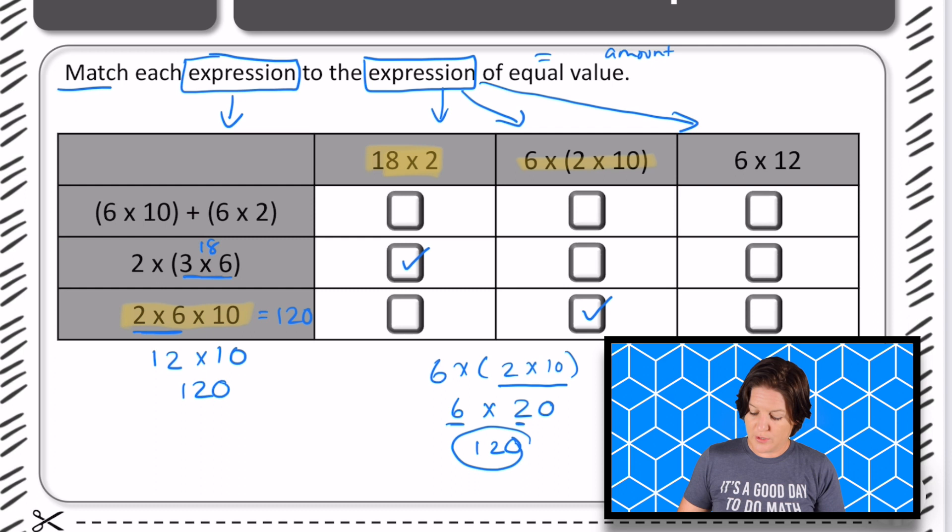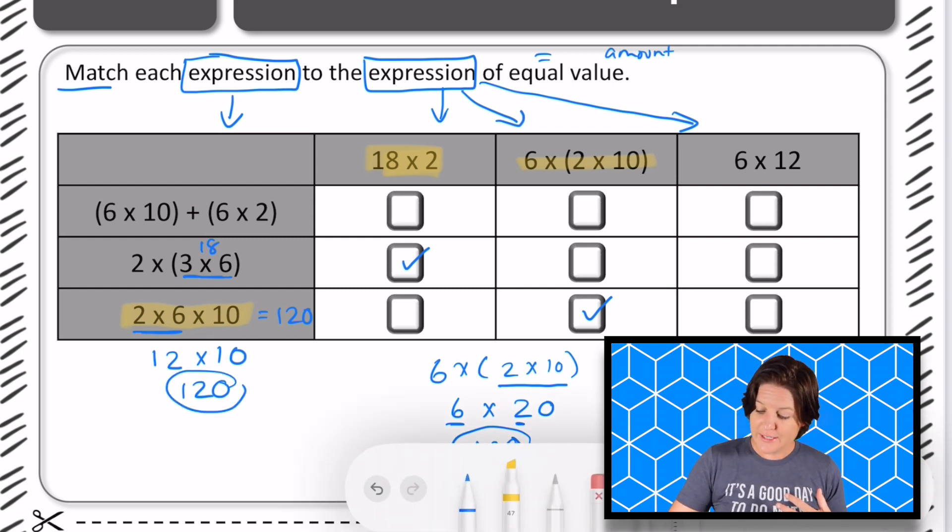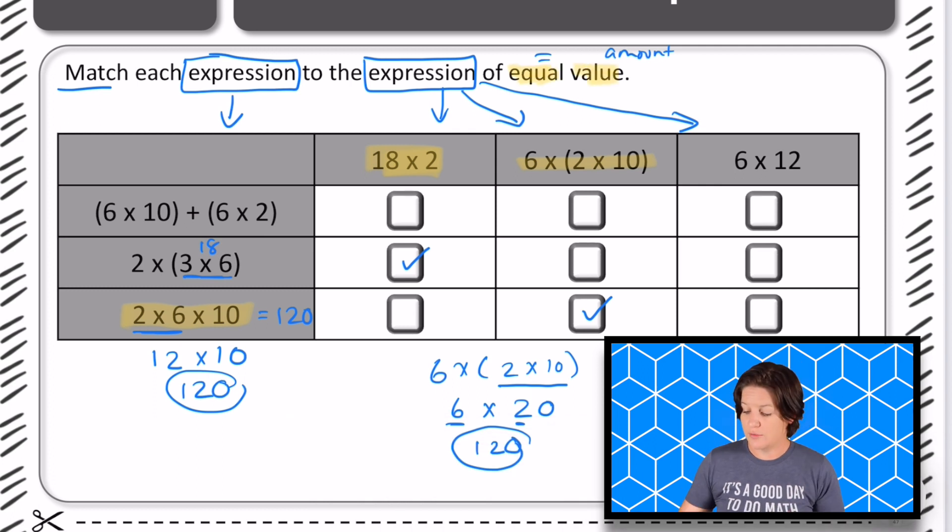And look, they both have a value of one hundred twenty to prove that they are of equal value, just like the direction said.